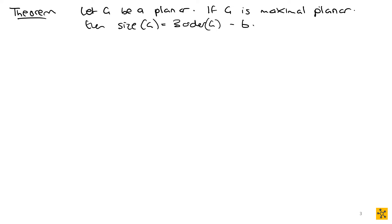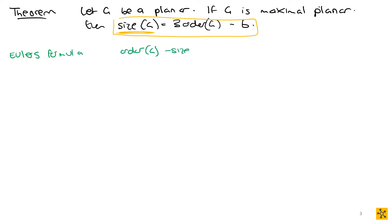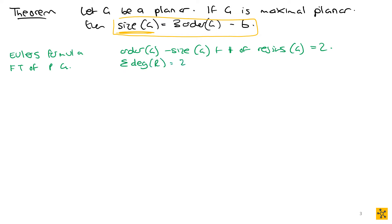To prove this directly, we want to get the equation |E(G)| = 3|V(G)| - 6. We know theorems involving planar graphs that incorporate size in their formulas. We know Euler's formula: the order of G minus the size of G plus the number of regions of G equals two. We also know from the first theorem of planar graphs that the sum of the degrees of the regions equals two times the size of G.